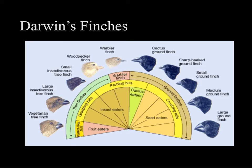One of the things that Darwin was most inspired by in the Galapagos Islands were all of the different species of finches that he saw. Finches are birds. He saw similar species of finch on the mainland in South America, but then found all these different species on the different islands in the Galapagos. He thought, how did they all become so different? And this is one of the things that led him to develop his theory of natural selection.